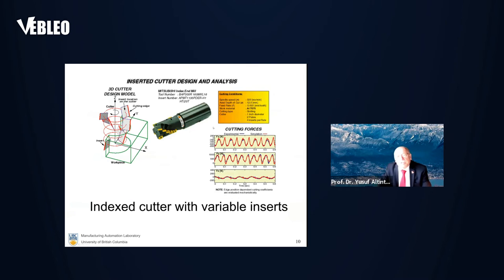And this is another example. This is an indexable cutter, machining aluminum. Again, simulation and experimental results are in good agreement. I'm showing these two slides to show that generalized mathematical model is able to predict any machine operation.